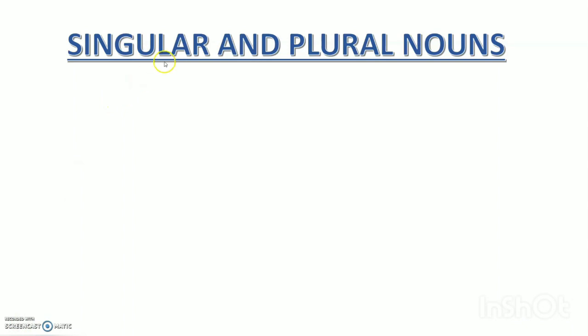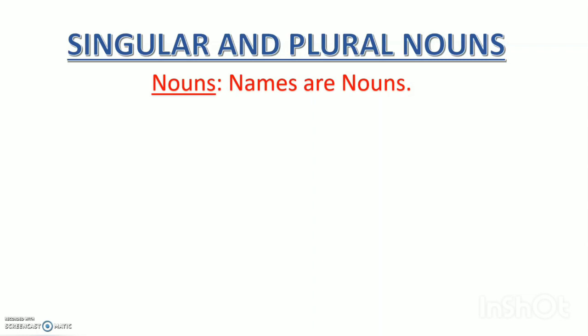So, children, let's begin our learning of singular and plural nouns. But before that, let's have a small revision of what are nouns. What are nouns? Names are nouns — names of people, places, animals, things, etc. are called nouns.